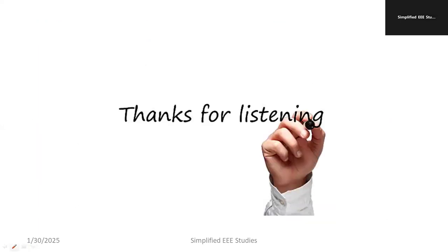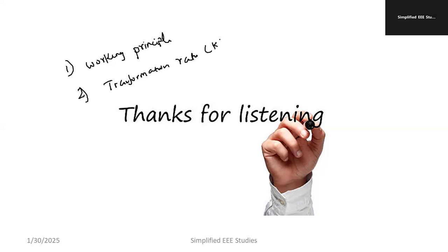Let us conclude the session. In this session we discussed the working principle of transformer — in a single sentence, a transformer works based on the principle of mutual induction. Second, we discussed the transformation ratio K, and by its value we can predict whether the transformer performs step-up or step-down action. Third, we discussed the symbol of transformer. In the forthcoming session I will come up with numerical examples to make the concept clear. If you have any queries, do let me know in the comment box. Thank you so much for watching. Happy learning. Have a great day.